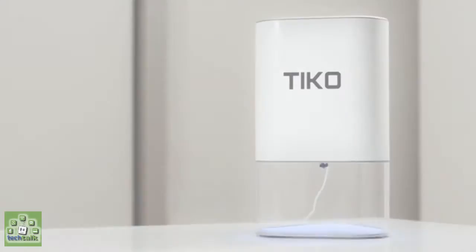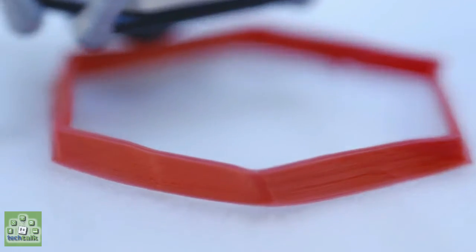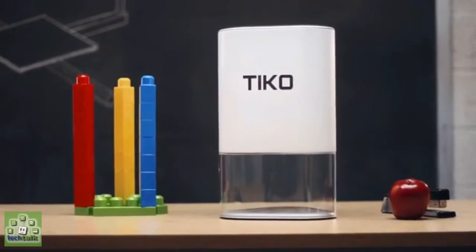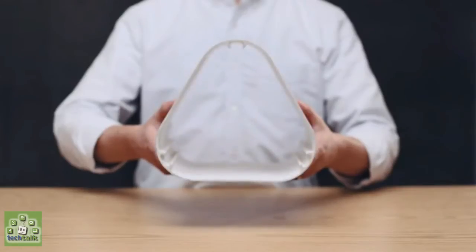Tyco's enclosed build chamber also means children and pets can't interfere with the liquifier, a small but dangerously hot component that is typically left exposed in other 3D printers. Taking things a step further, Tyco has an onboard accelerometer that automatically shuts the printer down if it's disturbed.